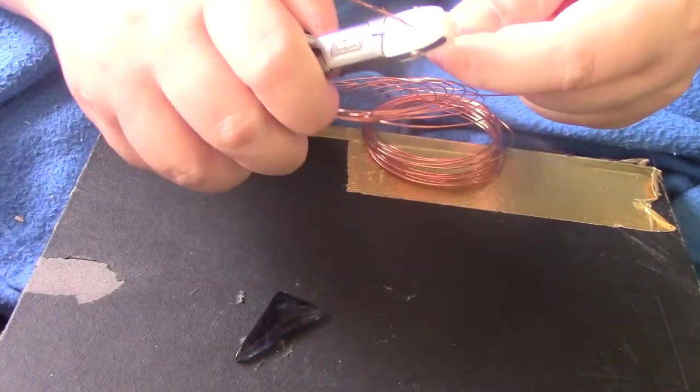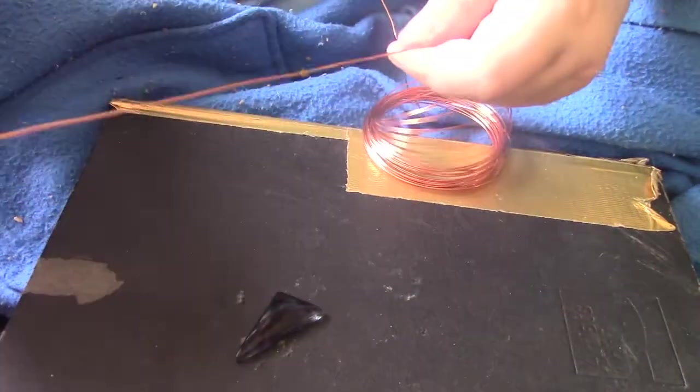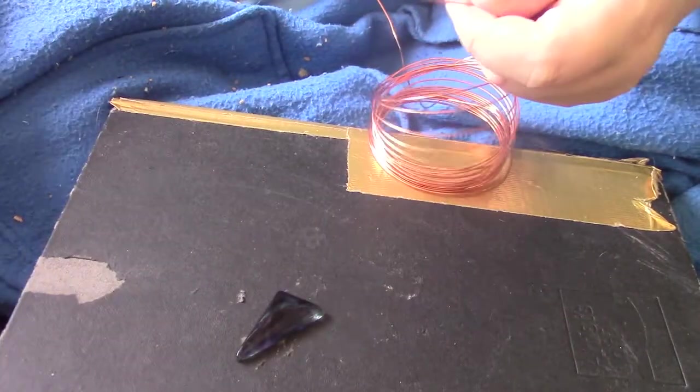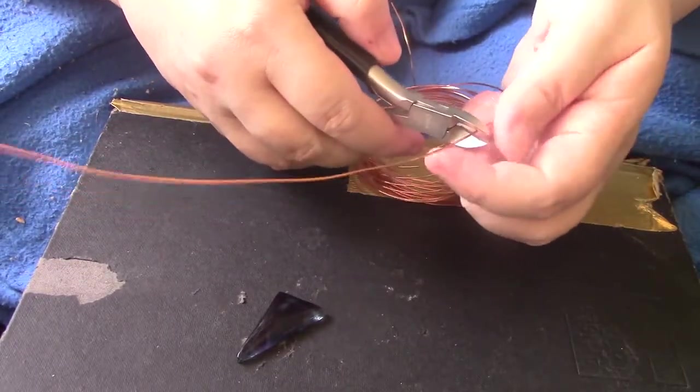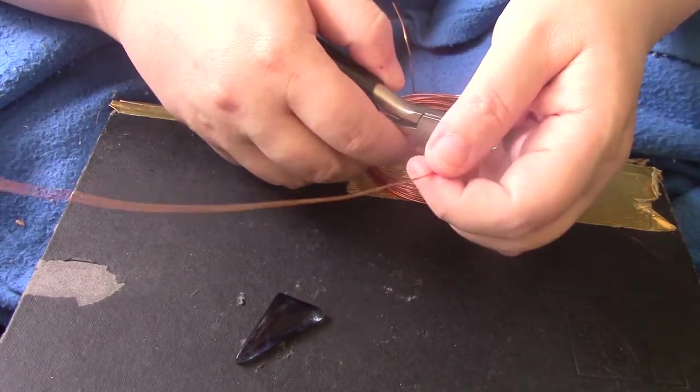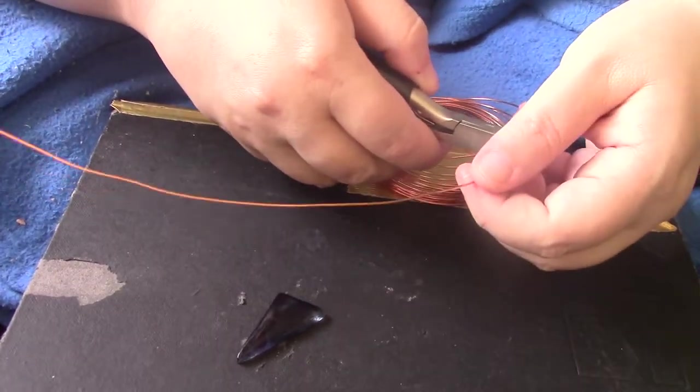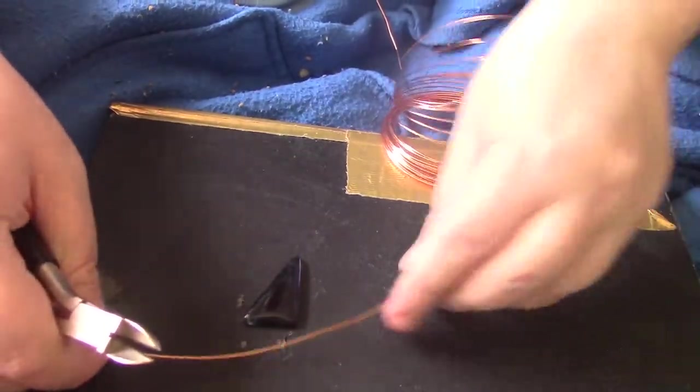For now, I am straightening out this copper here because it's got a lot of kinks in it. And I'm just kind of deciding where to cut it. Just kind of looking at the stone, kind of figuring out, well, how big does it need to be?